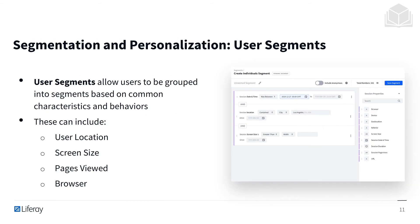Next is user segments. User segments allow users to be grouped into segments based on common characteristics and behaviors that we decide. These can include user location, screen size, pages viewed, browser, and more.